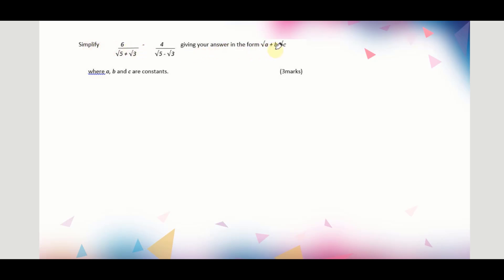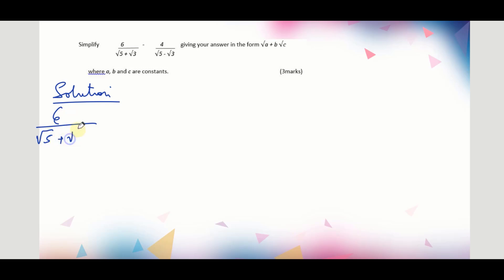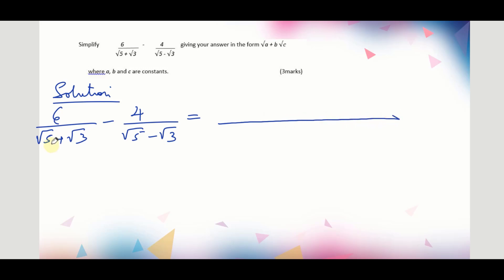Simplify, giving your answer in the form √a + b√c, where a, b, and c are constants. So let's go to the solution. We have 6 divided by (√5 + √3), subtract 4 divided by (√5 − √3).